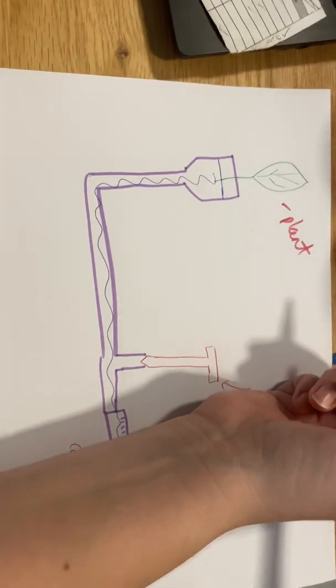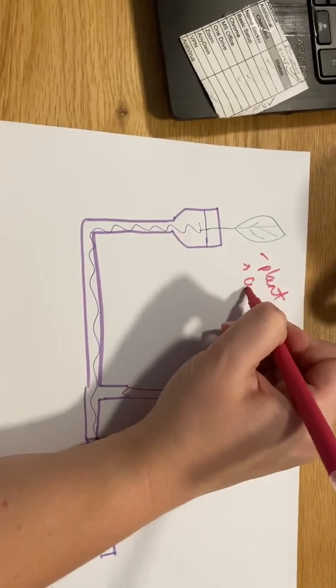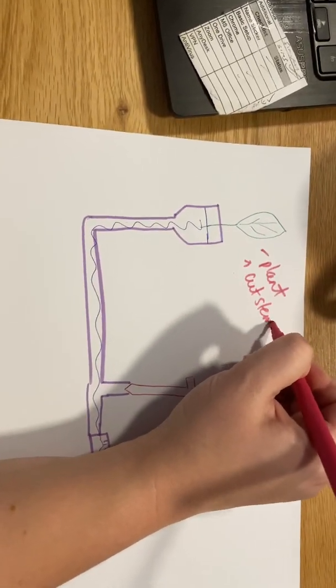We're using this because remember, transpiration has to happen in a plant. What's important is that the stem has been cut diagonally.